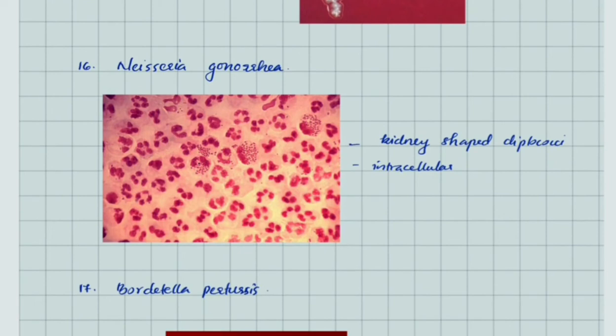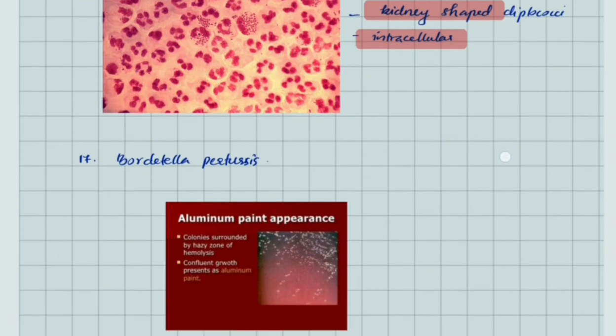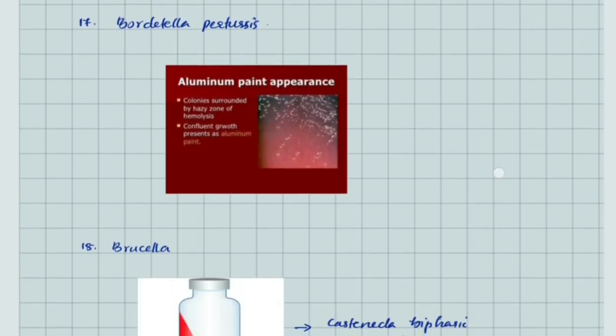Neisseria gonorrhoeae has diplococci arranged intracellularly or extracellularly with typical kidney shape. Bordetella pertussis shows aluminum paint appearance due to hemolysis.